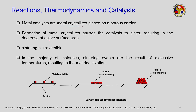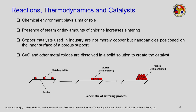Formation of metal crystallites causes the catalyst to sinter, resulting in a decrease of active surface area. Sintering is irreversible and is the result of excessive temperature — thermal deactivation. The metal crystallites join together as two-dimensional or three-dimensional clusters, blocking the entire surface area and lowering the reaction rate. Chemical environment also plays a major role — steam or tiny amounts of chlorine increase sintering.